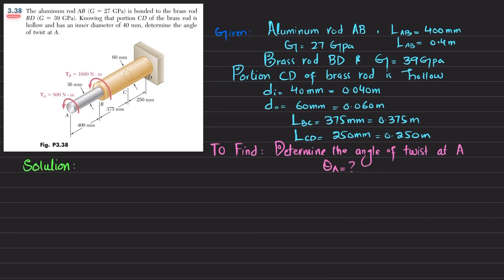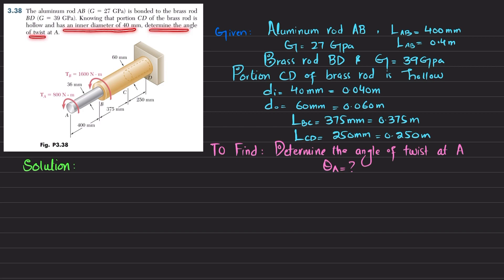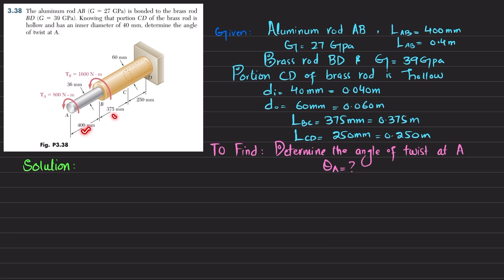Welcome back. Problem 3.38. The statement is: aluminum rod AB, with G = 27 GPa, is bonded to brass rod BD having G = 39 GPa. Knowing that portion CD of the brass rod is hollow and has an inner diameter of 40 mm, determine the angle of twist at A. The length of AB is 400 mm, BC is 375 mm, and CD is 250 mm.